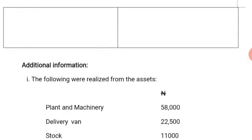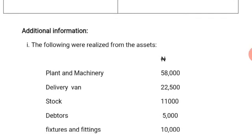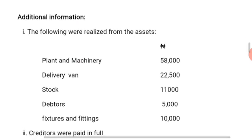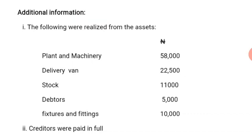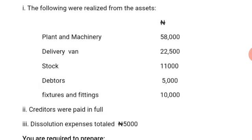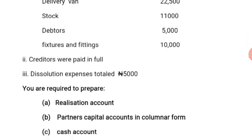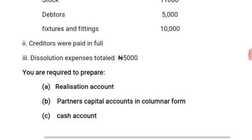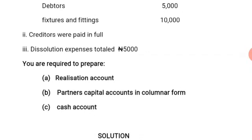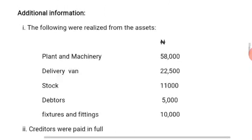Now to the additional information: the following were realized from the assets — plant and machinery 58,000 Naira, delivery van was sold for 22,500 Naira, stock was sold for 11,000 Naira, debtors realized 5,000 Naira, fixtures and fittings was sold for 10,000 Naira. The creditors were paid in full and the dissolution expenses totaled 5,000 Naira.